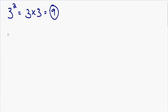But what happens if we have a 3 with a negative 2 exponent? If you've never seen a negative exponent, the natural logic would be: if 3 with a positive 2 exponent is positive 9, then 3 with a negative 2 exponent would be negative 9. And if you use that logic, you are going to be completely wrong 100% of the time.